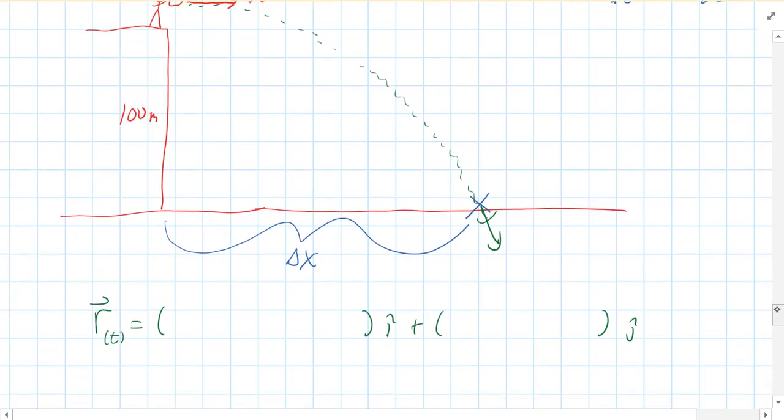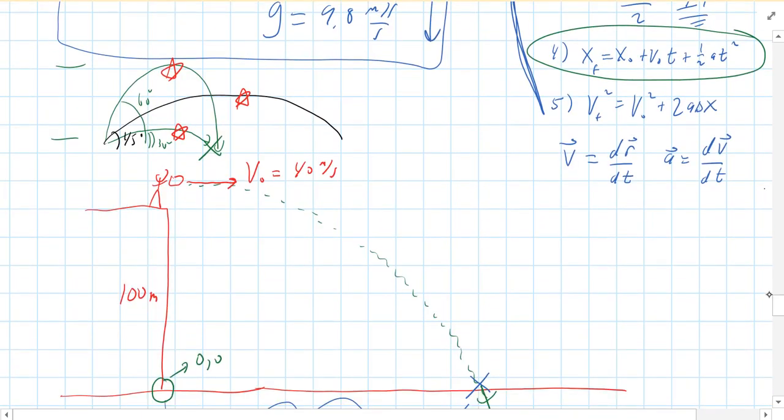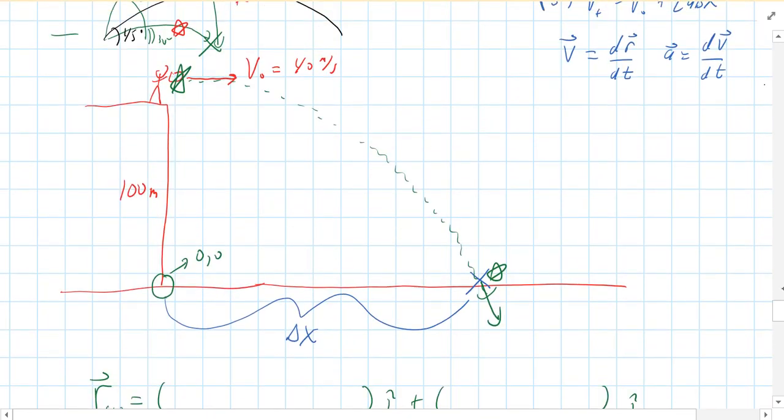Now one last thing before I do that. Well two last things. We have to have an origin. I'm going to call the base of the building, that's going to be my origin. That's going to be 0 comma 0. And the two locations I'm studying is the moment of launch and the moment of impact. Finally I've got to decide on positive directions. So I'm going to say up and to the right is positive. Again you don't have to do that. You can say down is positive if you'd like. But I'll go with up is positive.